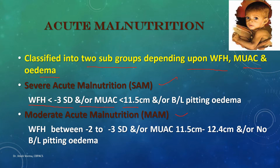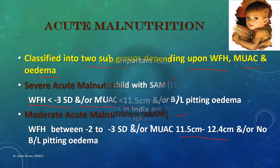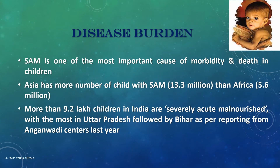In moderate acute malnutrition (MAM), weight for height is between minus two and minus three z-scores for that particular height, MUAC is between 11.5 to 12.4 cm, and there is no pitting edema.